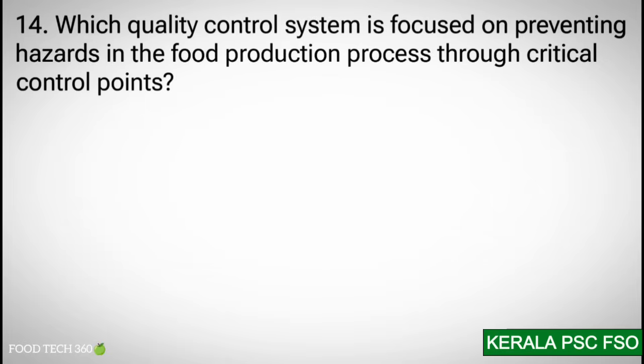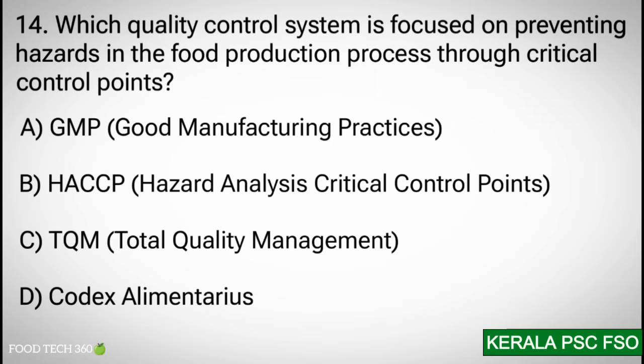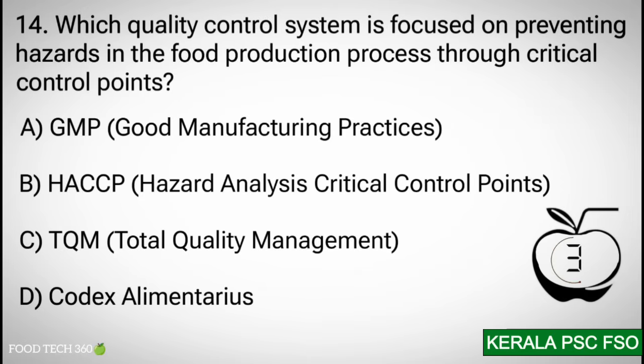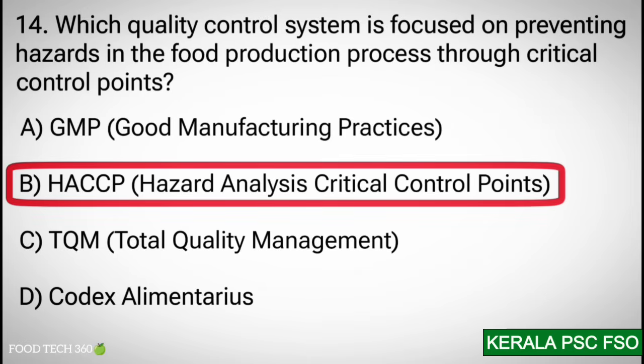Question 14: Which quality control system is focused on preventing hazards in the food production process through critical control points? Options: a) GMP — Good Manufacturing Practices, b) Hazard Analysis Critical Control Points (HACCP), c) TQM — Total Quality Management, d) Codex Alimentarius. Correct answer: b) HACCP — Hazard Analysis Critical Control Points.